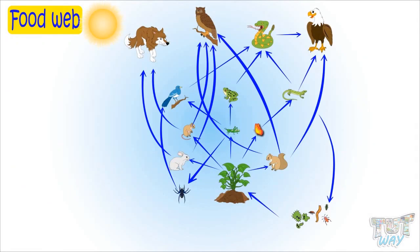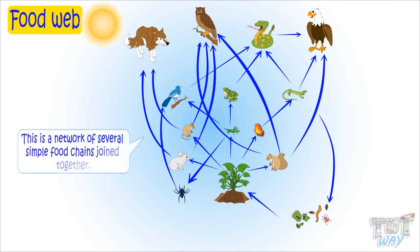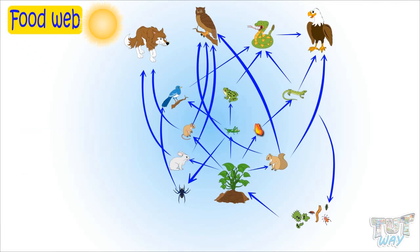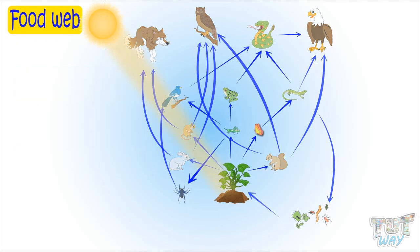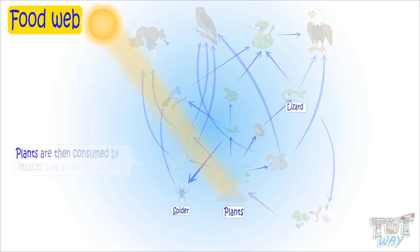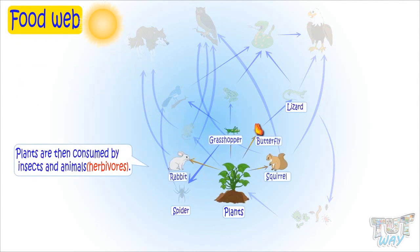A food web is much more complicated than a food chain. Now let's see examples of a food web. Here we have a simple example. This is a network of several simple food chains joined together. First of all, all plants prepare food using the energy from the Sun. Plants are then consumed by herbivore insects and animals.